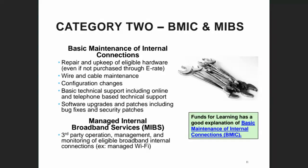Category 2 has two additional service types. Basic maintenance of internal connections can involve the repair and upkeep of eligible equipment — someone coming to the building when something breaks, monthly maintenance checks, or a one-time charge for software patches or upgrades. A lot of times Kentucky libraries request basic maintenance in the form of subscriptions from the manufacturer that give them access to technical support as well as software updates for the equipment. Products like Cisco SmartNet come up quite a bit.